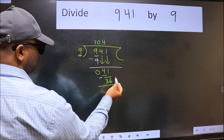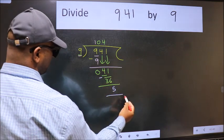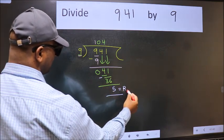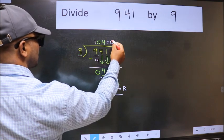No more numbers to bring down. So we stop here. This is our remainder and this is our quotient.